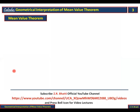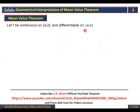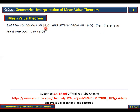Mean Value Theorem — Statement: Let f be continuous on the closed interval [a, b] and differentiable on the open interval (a, b). Differentiability at the end points of the interval is not required. Then there is at least one point C in (a, b) such that f'(C) equals f(b) minus f(a) over b minus a.